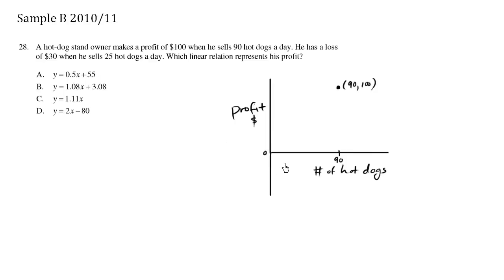when he sells 25 hot dogs, so 25 hot dogs we'll just say is around here, and we're going to be at negative thirty dollars, so negative 30 is around here. So this is 25 comma negative 30.